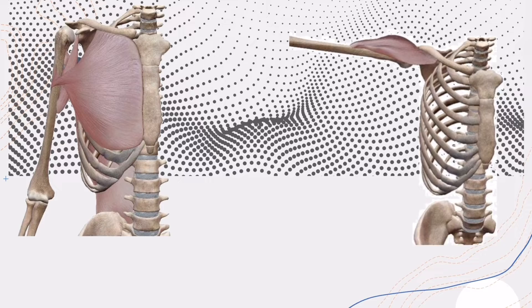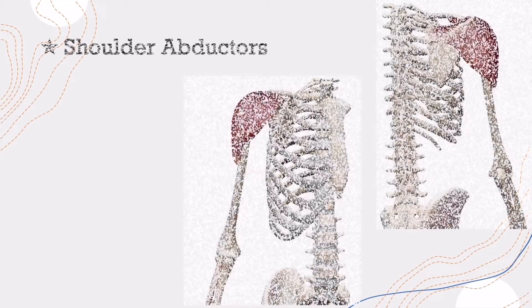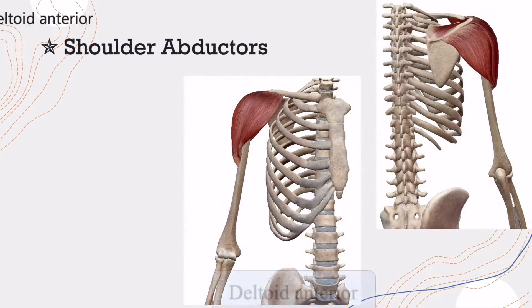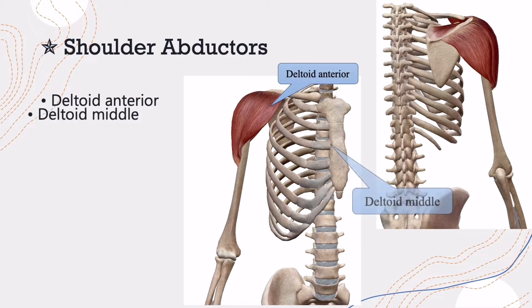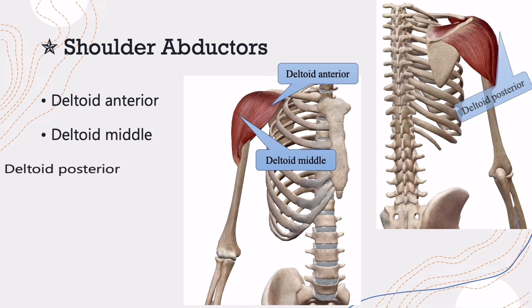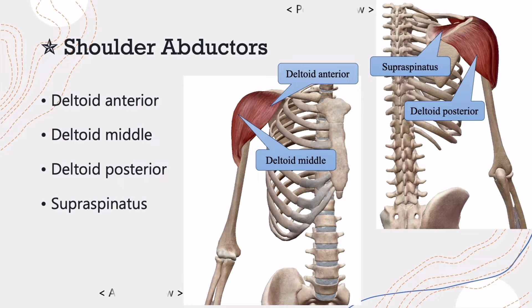Shoulder Abductor and Adductor Muscles. There are four main muscles for shoulder abductors: deltoid anterior, deltoid middle, deltoid posterior, and supraspinatus.